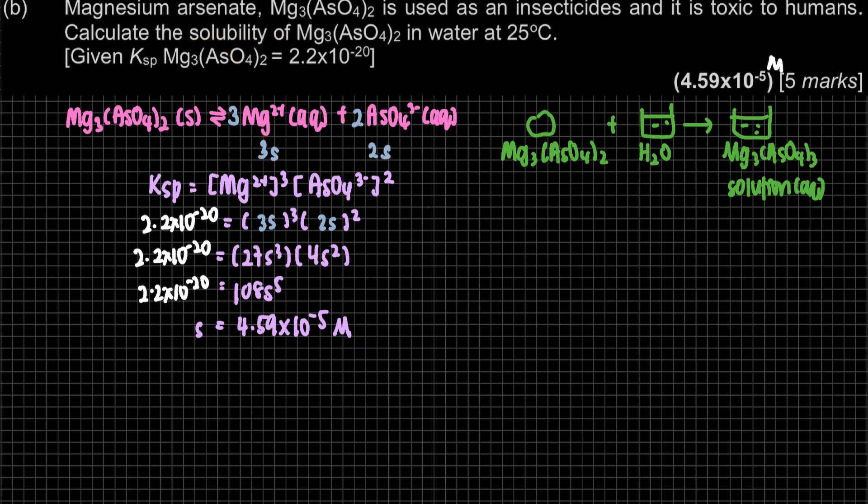Make sure that once you write down the Ksp, this one Mg2+ to the power of 3. Here AsO4 to the power of 2. And then when you include it, this one must be 3S. We're going to write down this is S, because based on this, this is 3S. The same goes here. But then remember the question asked for solubility. We have to find, we have to expand this to find the S. Until we find the S here, then we will get the value.